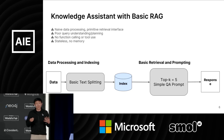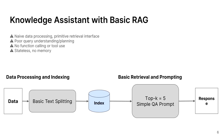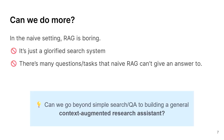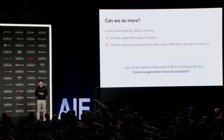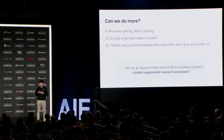If you build a knowledge assistant with a very basic RAG pipeline, you run into the following issues. First is a naive data processing pipeline — you put it through some basic parser, do some sentence splitting, chunking, do top-K retrieval, and then you realize that even if it took you 10 minutes to set up, it's not suitable for production. It also doesn't have a sense of being able to understand more complex, broader queries — so query understanding and planning. There's also no sophisticated way of interacting with other services, and it's also stateless, so there's no memory. Simple RAG is really just a glorified search system on top of retrieval methods that have been around for decades, and there's a lot of questions and tasks that naive RAG can't give an answer to.